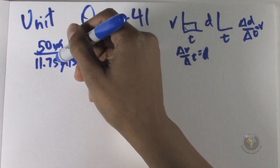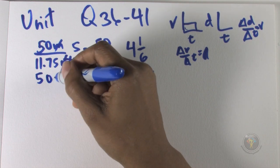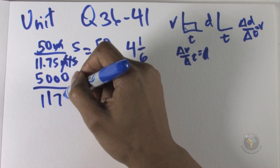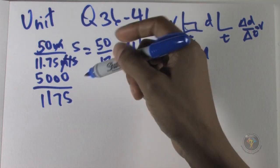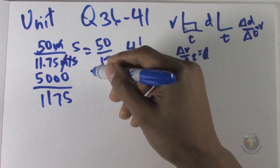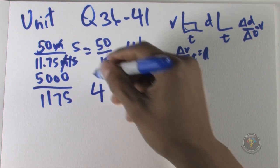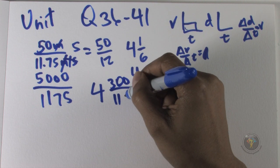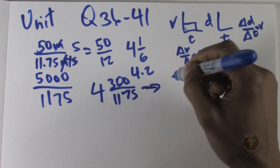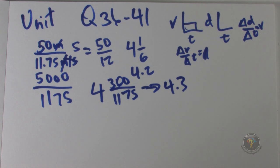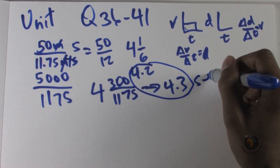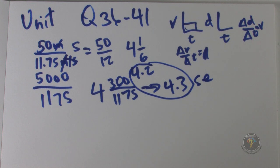That gives approximately 4.2 to 4.3 seconds. For a more precise estimate, multiply top and bottom by 100 to get 5000 over 1175, and working through that arithmetic brings us closer to 4.3 seconds. Either way, the answer to question 36 is B, roughly 4.3 seconds.